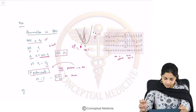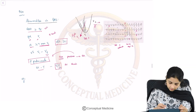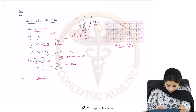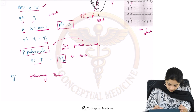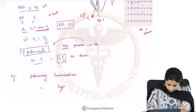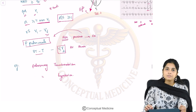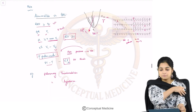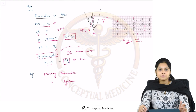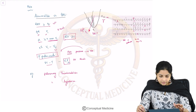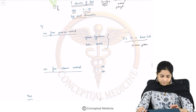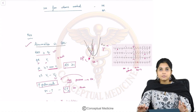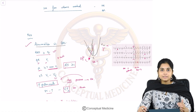RVH can be found in conditions such as pulmonary thromboembolism and pulmonary hypertension. With this, we have come to the end of how to approach chamber enlargement and hypertrophies — covering right atrial enlargement, left atrial enlargement, left ventricular hypertrophy, and right ventricular hypertrophy. In the next session, we will be looking at bradyarrhythmias. Thank you.